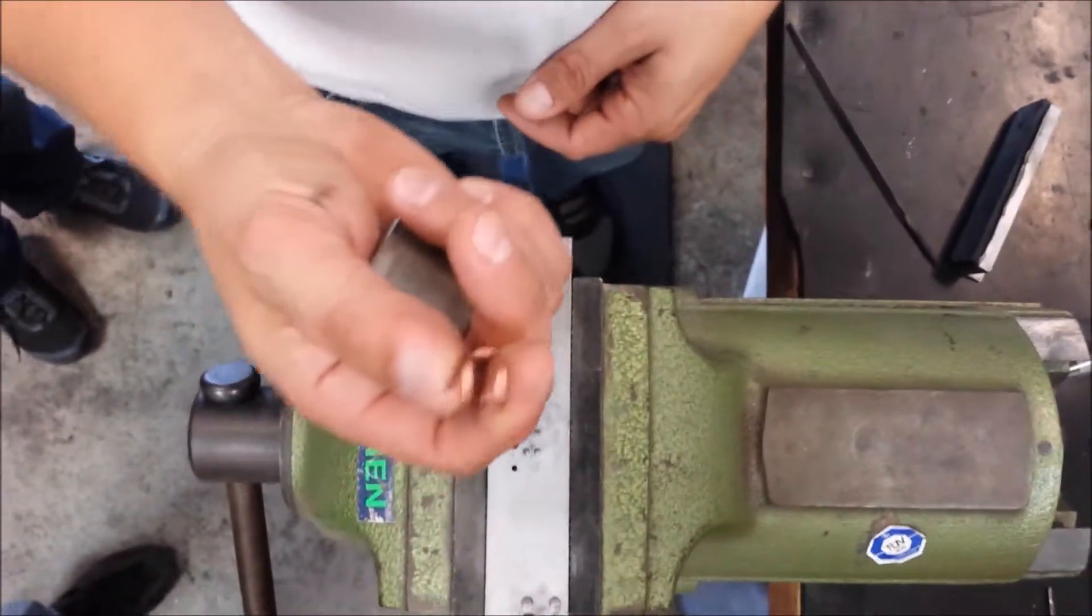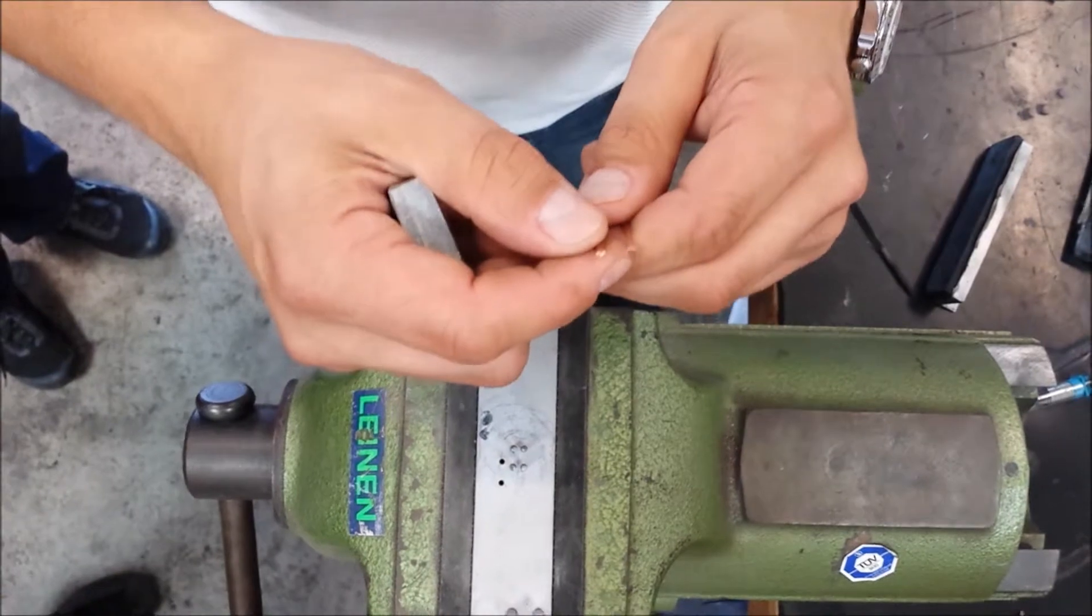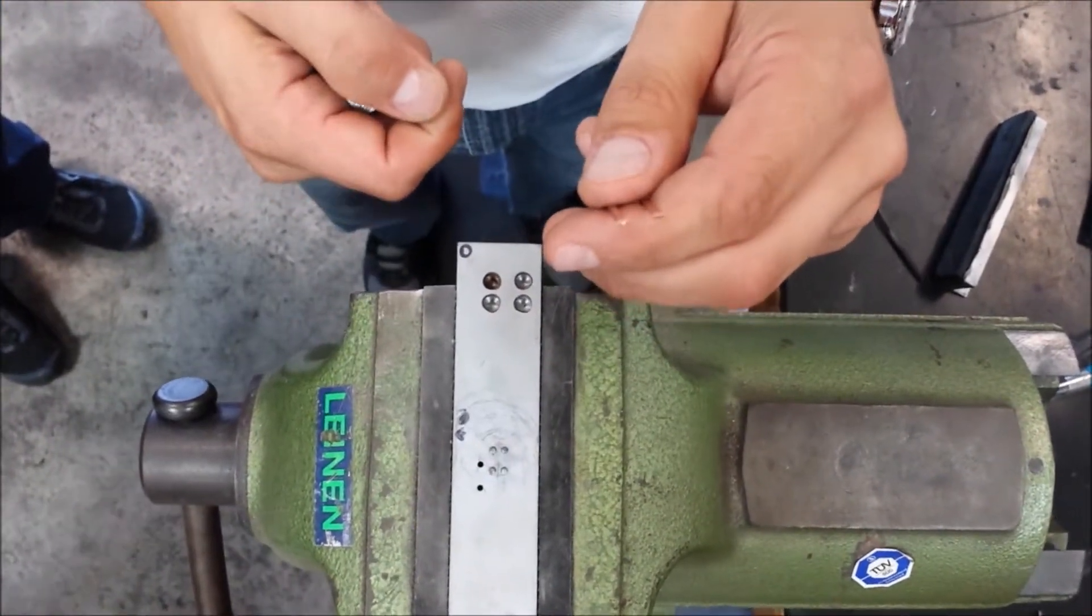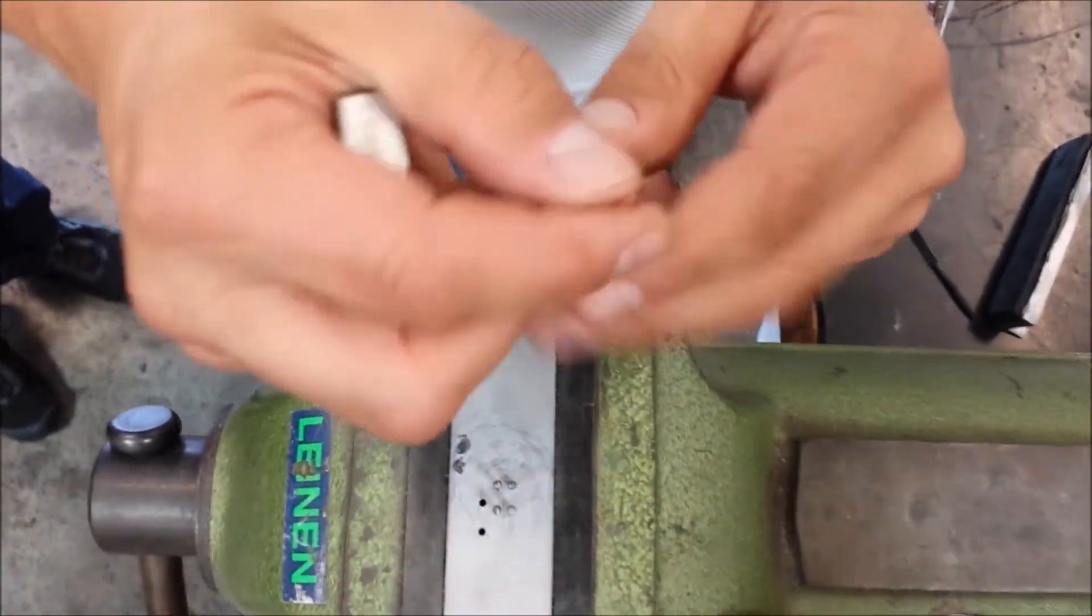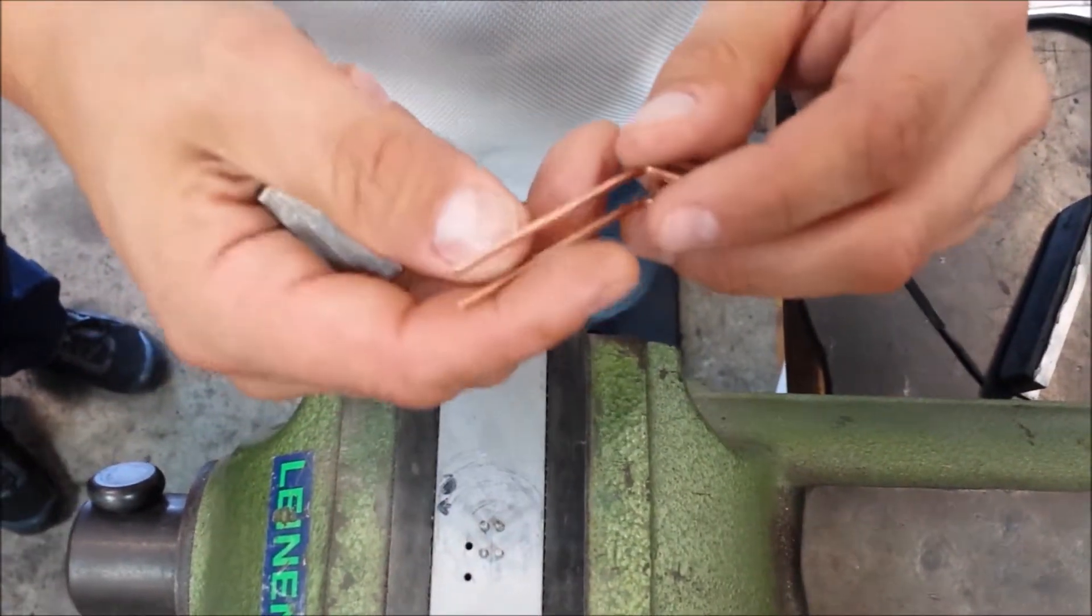The copper tubing is filled with sand. We pinched one end off prior to bending, filled it with shot glass bead media, then pinched the other end closed so we could bend it.